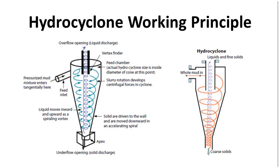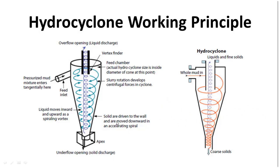This slide shows the hydrocyclone working principle with the help of text. The feed, which is mud carrying solids, enters through the tangential feed point or path under pressure, making a spiral movement and creating a downward vortex. Because of the rotational movement and centrifugal force, solid particles are thrown to the wall of the cone, and because of this spiral movement they are scraped down and exit from the apex point.